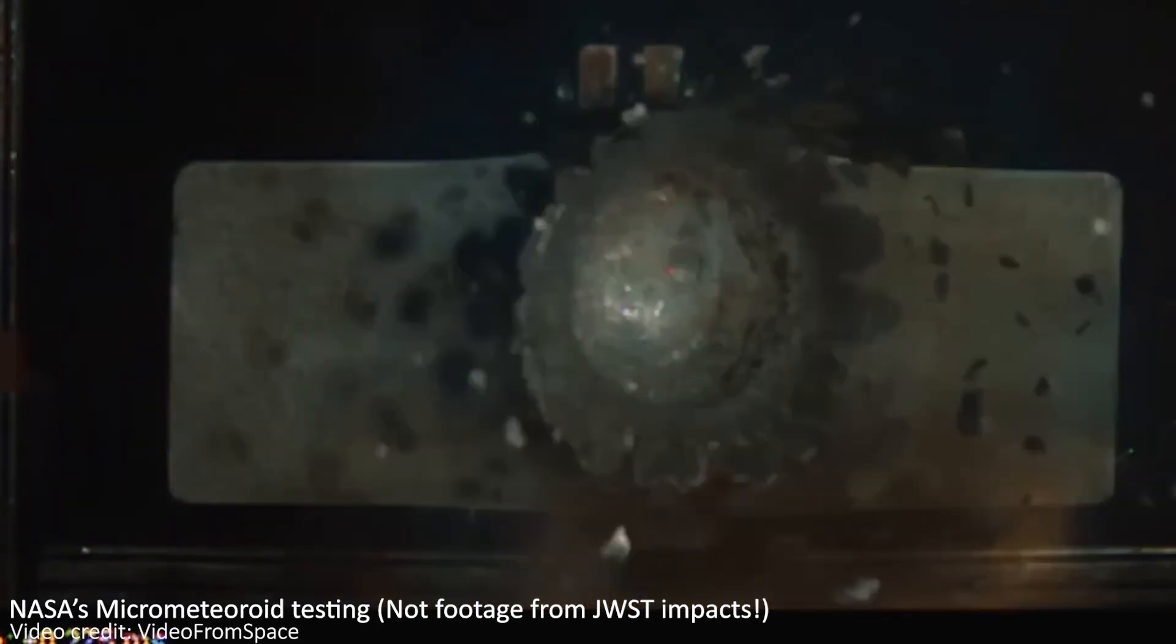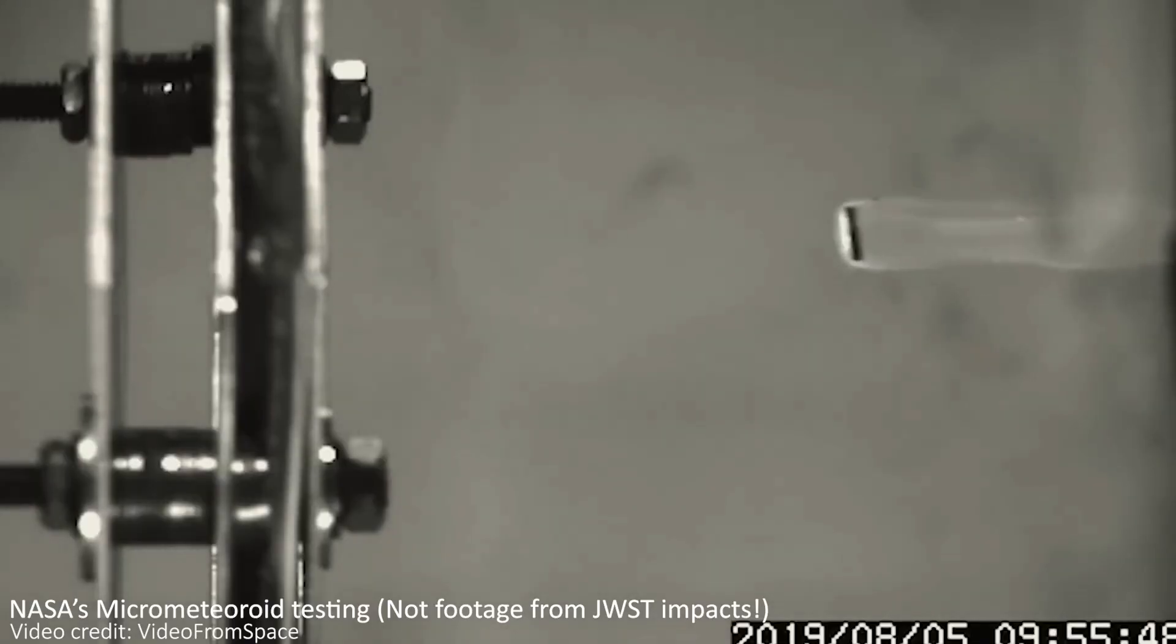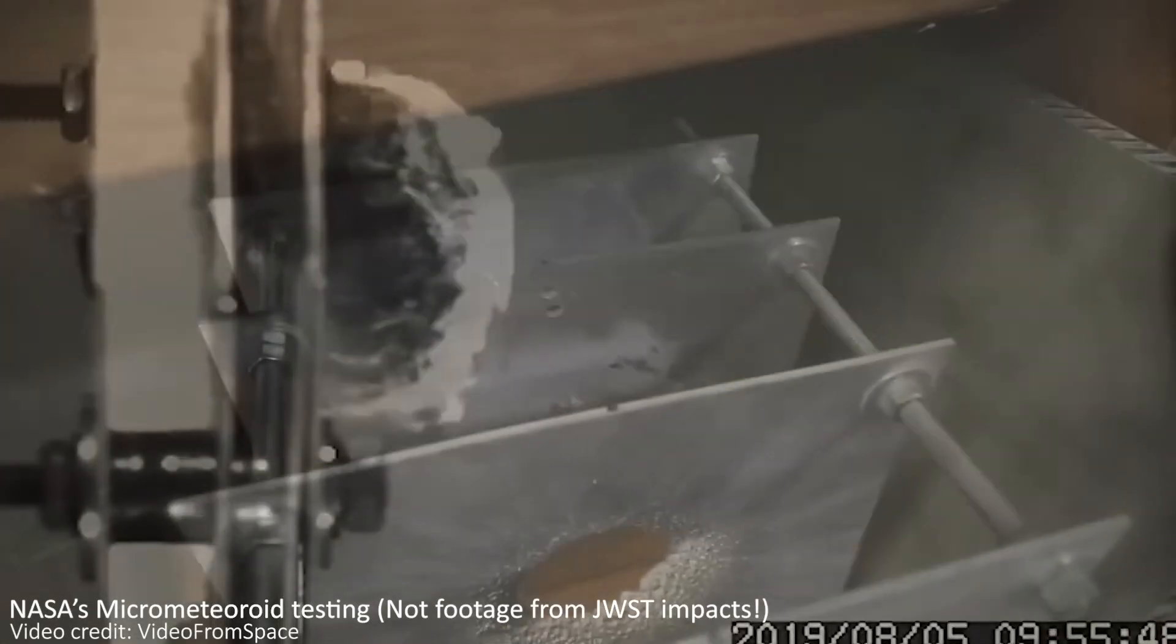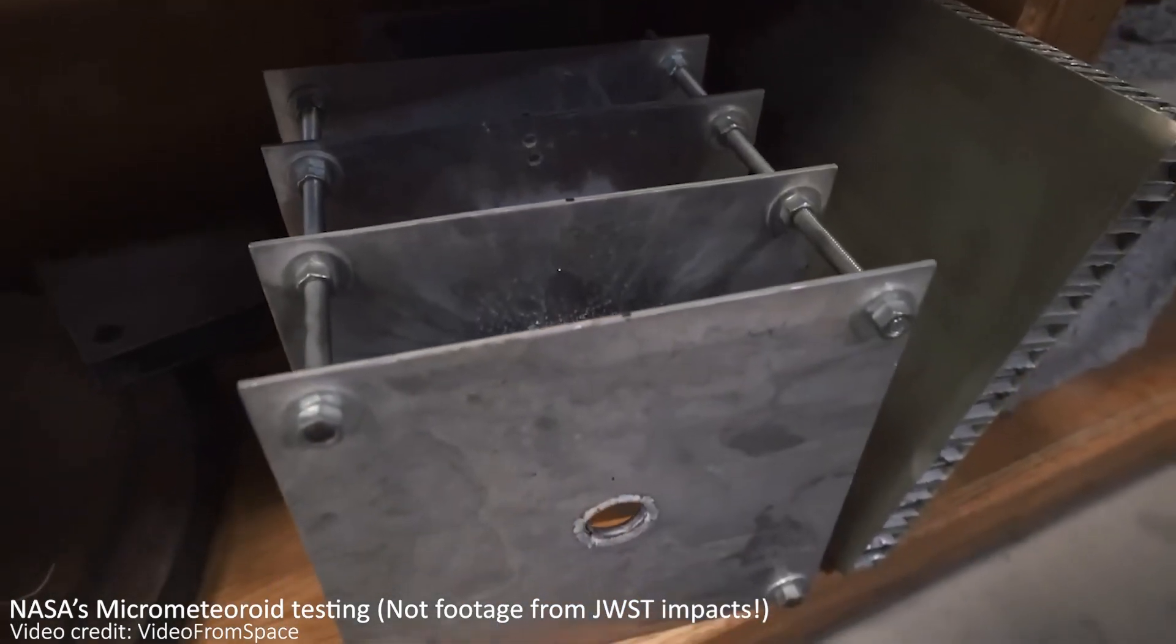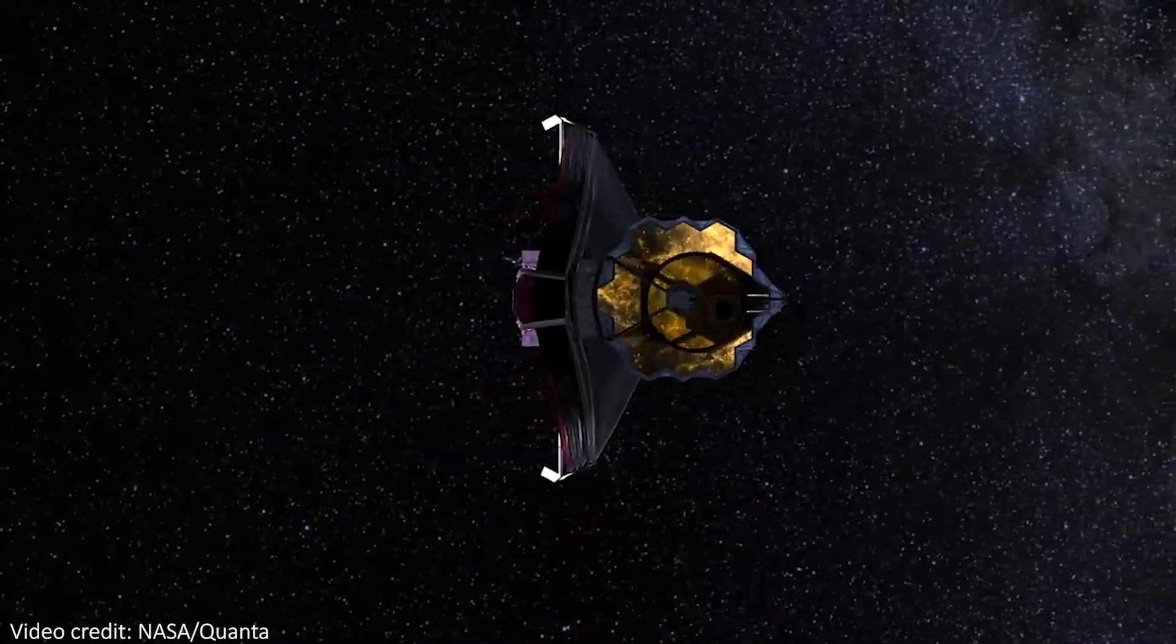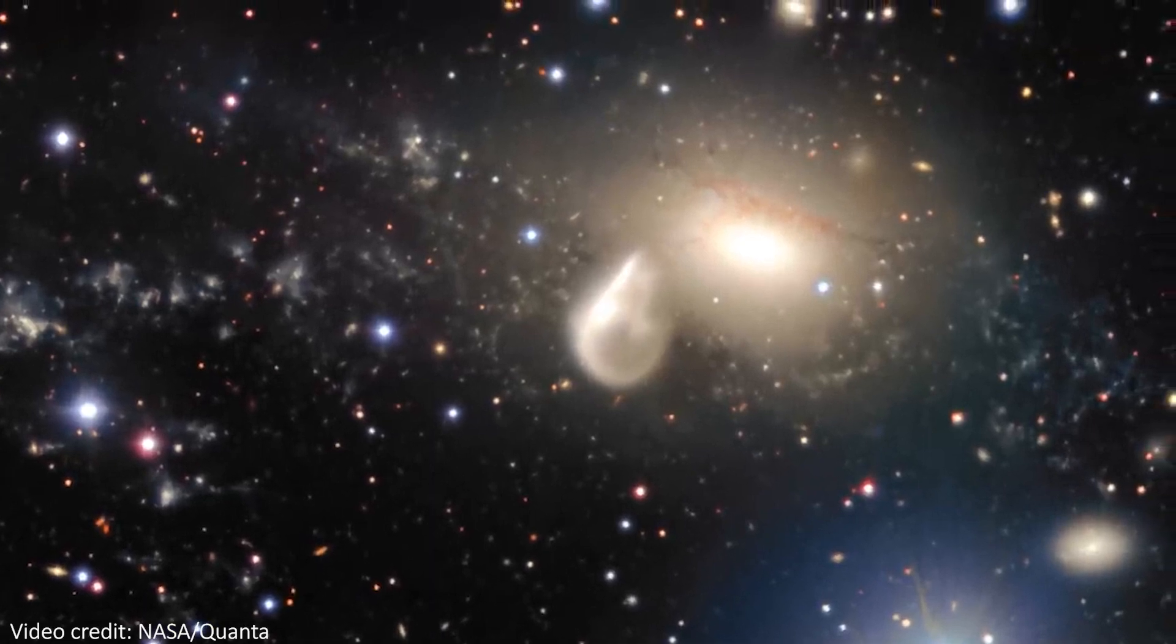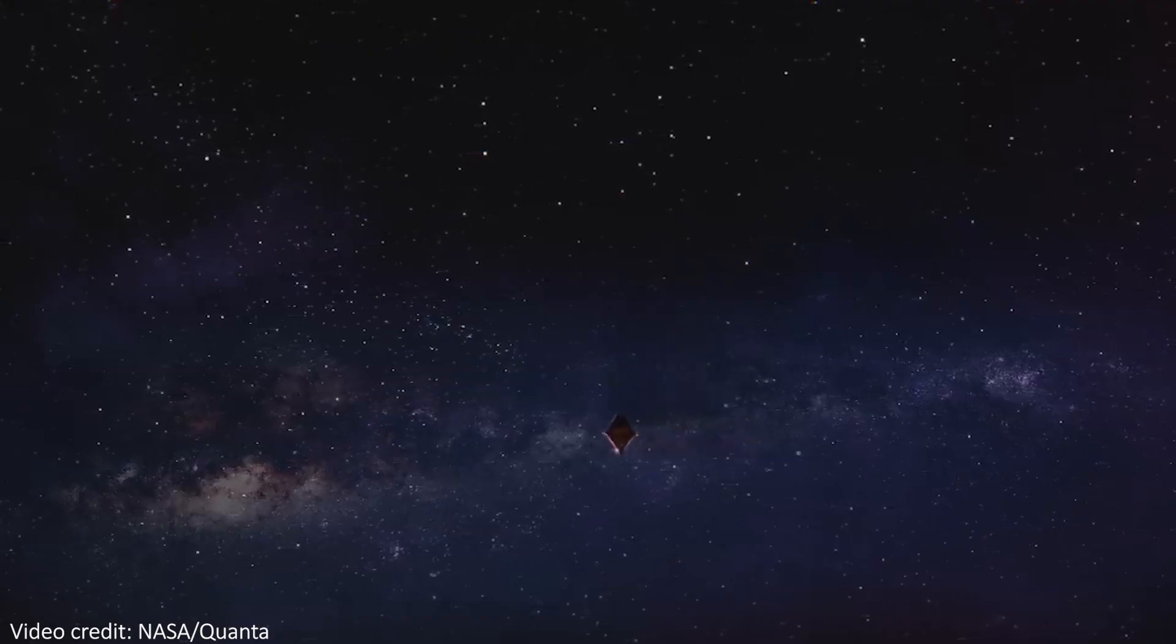Back in May 2022, JWST was hit by a micrometeoroid that was bigger and more energetic than we expected any such impacts to be. Now, NASA has revealed that since launch, JWST has been hit by 14 micrometeoroid impacts, but only that one in May was particularly bad. They now have a plan to minimize future impacts, so let's see what's new.